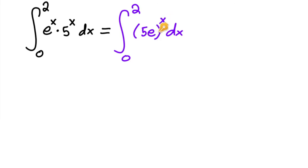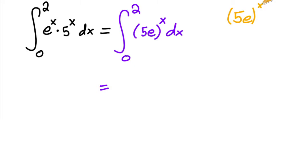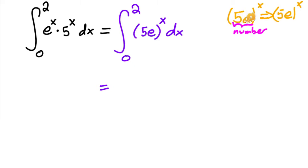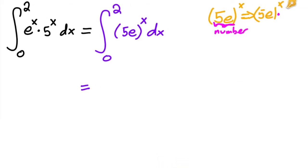You still have the problem that there's a five e base in here, so you go to your trusty guess-and-check method. What if the antiderivative is just five e to the x? Well, when you take the derivative of five e all to the x, you get five e to the x multiplied by the natural log of that base, which is natural log of five e.